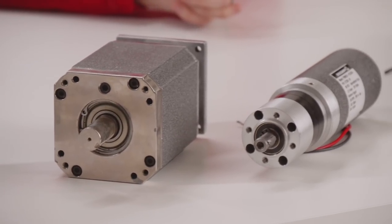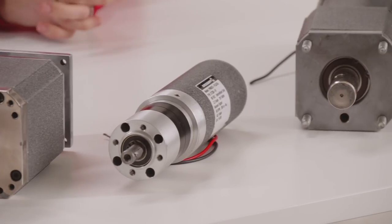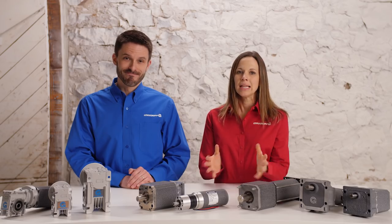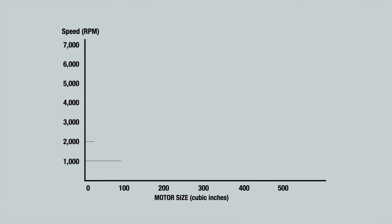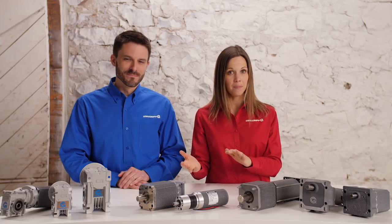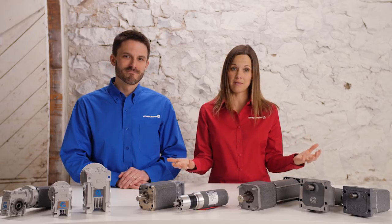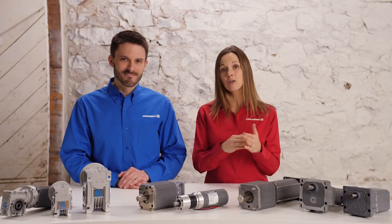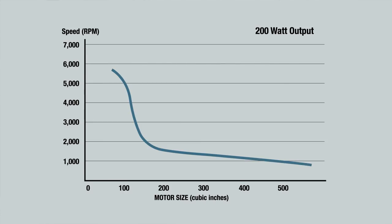Once the motor is selected, you'll need to consider the motor size versus its relationship to the desired speed and output torque, as this influences reducer selection. We've graphed the speed in RPM required for a range of different motor sizes to achieve an output of 200 watts. As you can see, you would need a roughly 500 cubic inch motor at 1,000 RPM to achieve 200 watts of output. Imagine the size motor you would need to run at 100 RPM — it would be the size of a house. Basically, the slower the motor speed, the larger the motor needs to be. Large motors can be expensive and may not fit the envelope specified for an application. The alternative is to pair a gear reducer with a smaller motor. The sweet spot on the curve is where motor size versus speed is optimized, and using a gearbox enables the smaller motor to operate in that zone.